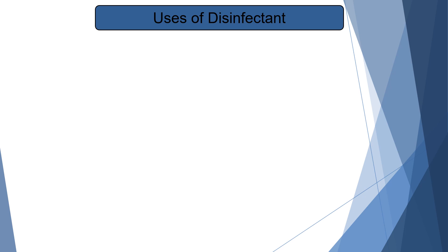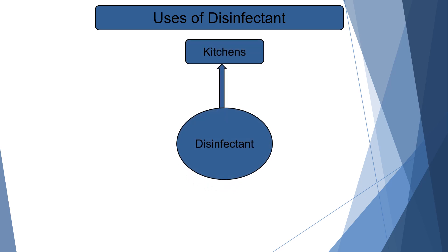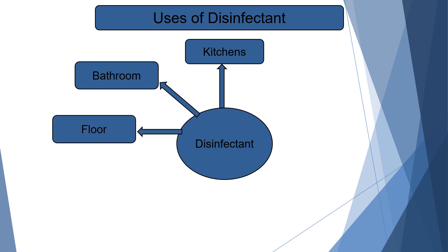Uses of disinfectant: Disinfectants are used on large scale and they are applied in various fields. So let's see them one by one. Disinfectant can be used in kitchens, in bathrooms as bathroom cleaners, on floors as floor cleaner, and as hand wash.